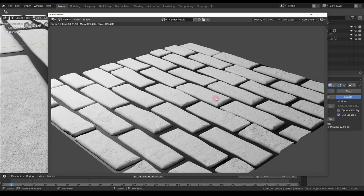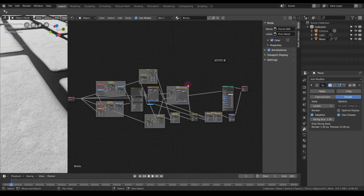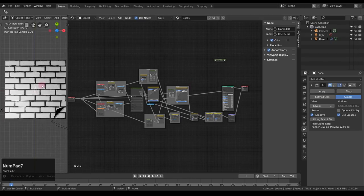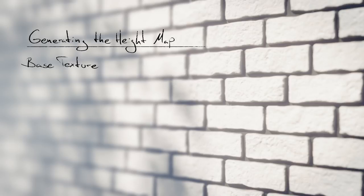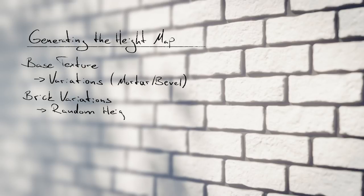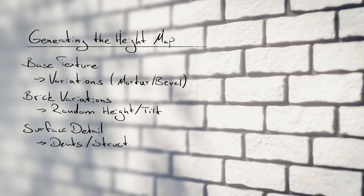It's starting to look quite good. Keep in mind that the only thing we've touched up to this point is the displacement and bump map. Let me give you a quick rundown: we started with the base texture and added variations to its settings, made variations to the bevel and mortar input, then added per-brick height and tilt variation using random values, added dents, general structure per brick, and fine detail. That's the general concept for tackling most shaders — but that was just the height map part.